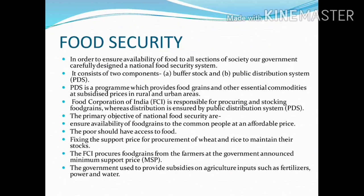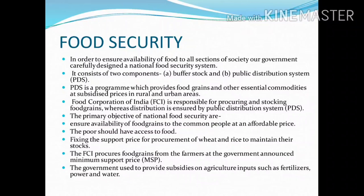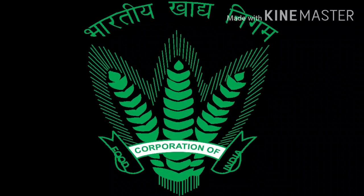Now let us see food security. In order to ensure the availability of food to all sections of society, our government carefully designed a national food security system. It consists of two components: buffer stock and public distribution system. The Public Distribution System (PDS) is a program which provides food grains and other essential commodities at subsidized prices in rural and urban areas. The Food Corporation of India (FCI) is responsible for procuring and stocking food grains, whereas distribution is ensured by the PDS. The primary objectives of national food security are to ensure availability of food grains to common people at an affordable price, ensure the poor have access to food, and fix the support price for procurement of wheat and rice to maintain their stocks. The FCI procures food grains from farmers at the government-announced minimum support price. The government also provides subsidies on agricultural inputs such as fertilizers, power, and water.